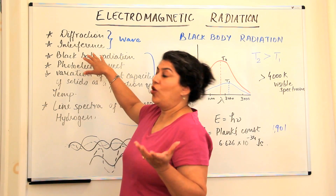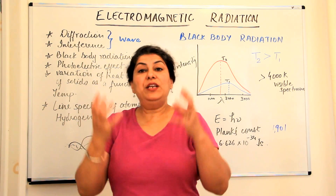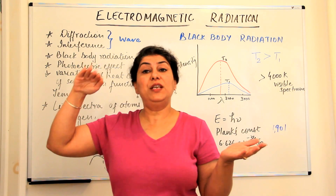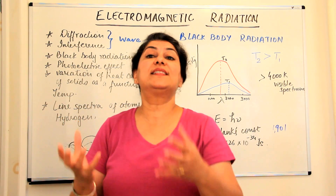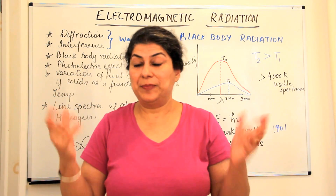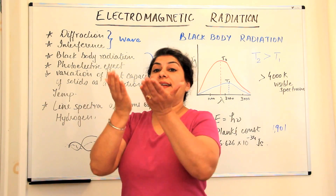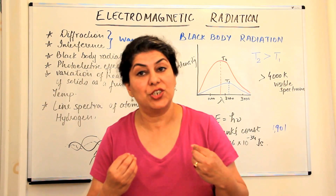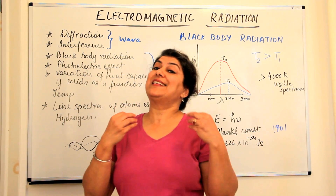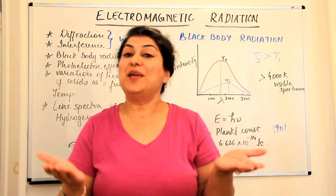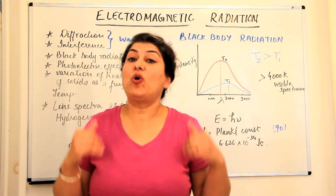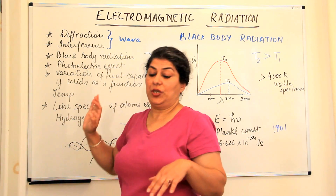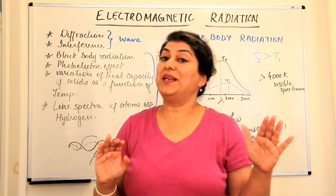The first phenomenon observed was black body radiation. When you heat up an object, it starts giving out light; above about 4,000 Kelvin it enters the visible range and the object starts glowing — for example, an iron rod heated until it glows. A black body is an ideal body which absorbs all radiations, so on heating we would expect it to release all radiations. Black body radiation could not be explained on the basis of the wave nature of light.